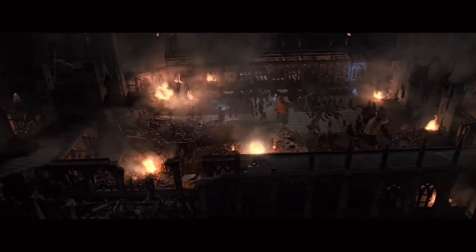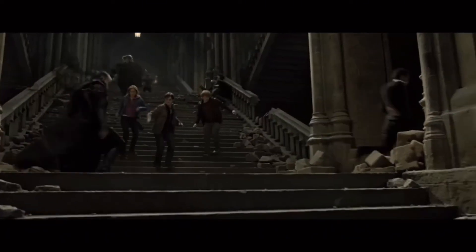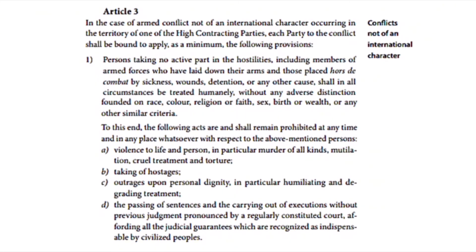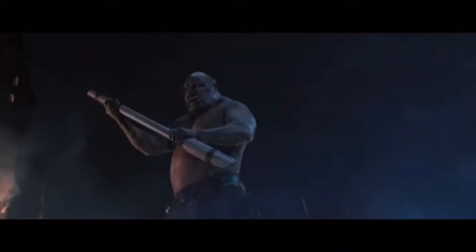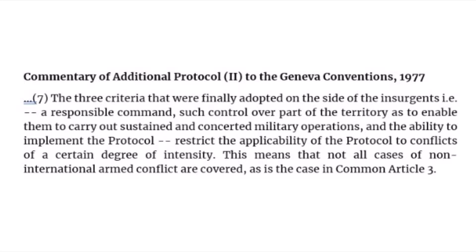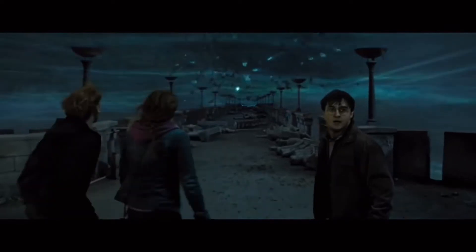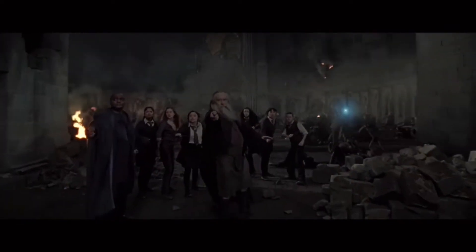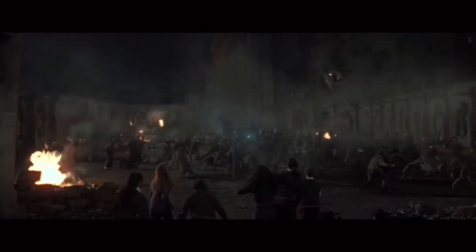These groups met the requirements for a non-state party to a non-international armed conflict based on Common Article 3 of the Geneva Conventions, because they possessed organized command structures and had the capacity to sustain military operations. Furthermore, the First Wizarding War met the intensity threshold required for a non-international armed conflict. However, based on Additional Protocol II of the Geneva Conventions, which applies in instances of state involvement in a non-international armed conflict, the requirement that non-state groups must possess territorial control is not fulfilled. This is because wizarding conflicts differ from Muggle wars — witches and wizards can time travel and teleport. It could therefore be argued that the territorial control requirement under Additional Protocol II should not apply in the wizarding world.